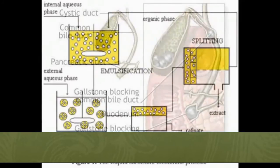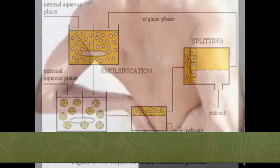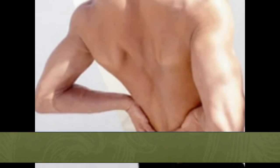The next thing that bile does in the intestine is to emulsify the fats and oils in the food that we eat. Emulsification is the process by which fats and oils are made water-soluble. Think of soap — it's next to impossible to rinse grease off a dish with plain water, but if you put a drop of soap on the dish, the grease washes right off. That's because soap is an emulsifier. Bile is the body's natural emulsifier, and it allows us to digest the fats and oils we eat.